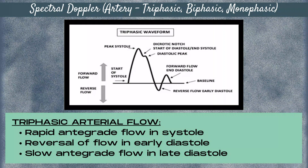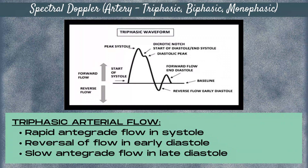There are three flow patterns for arteries on spectral Doppler: triphasic, biphasic, and monophasic. With triphasic arterial flow, there's rapid antegrade flow in systole, a reversal of flow in early diastole where the flow travels below the baseline, and then slow antegrade flow in late diastole where the flow returns above the baseline. This is a normal high resistance flow pattern, which we commonly see in extremity arteries.